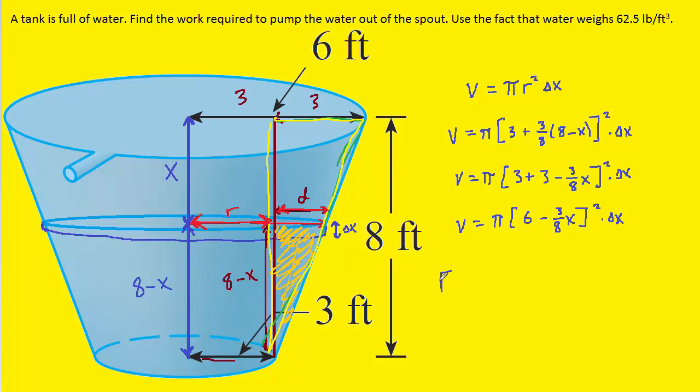And we know that the force required to lift that portion of water is simply going to be the weight of the water. Now the weight of the water is going to be its density multiplied by its volume. The question gives us the density as 62.5. So we know the force is going to be equal to 62.5 times that expression for volume.